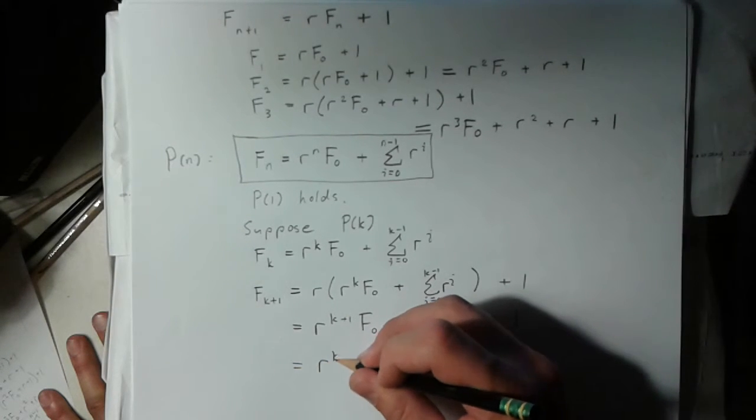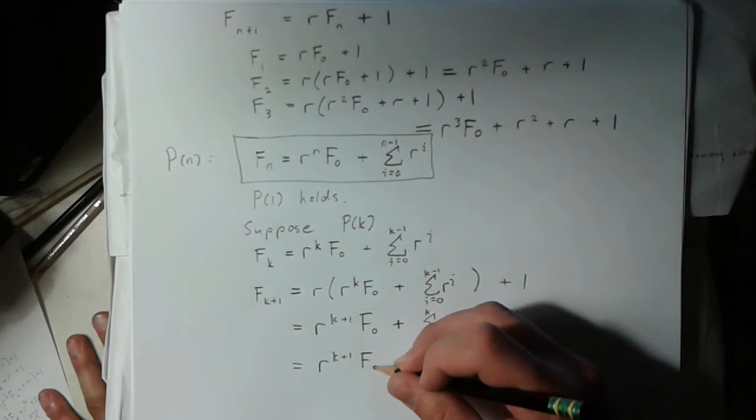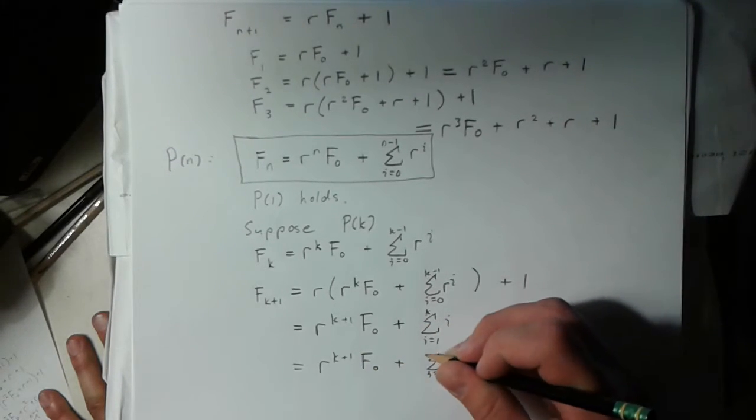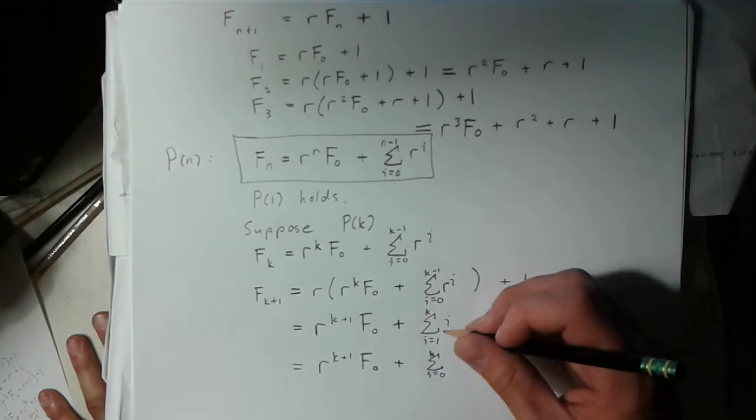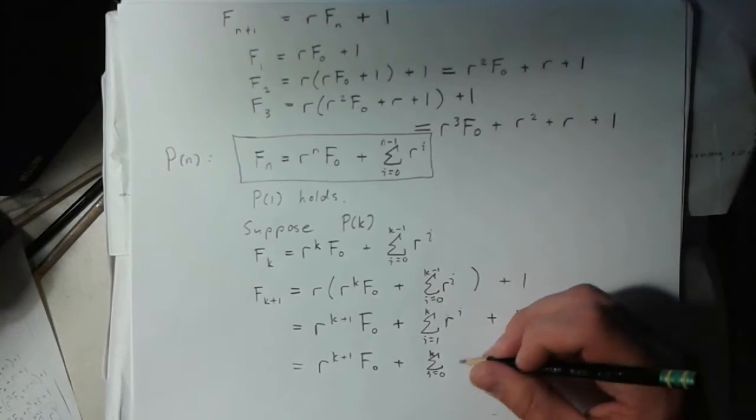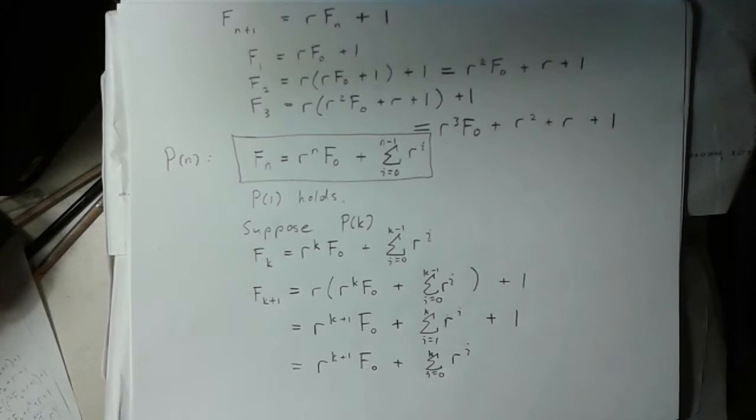So this is really r to the k plus 1, f0, plus sum from 0 to k. I keep forgetting this r here. Of r to the i.